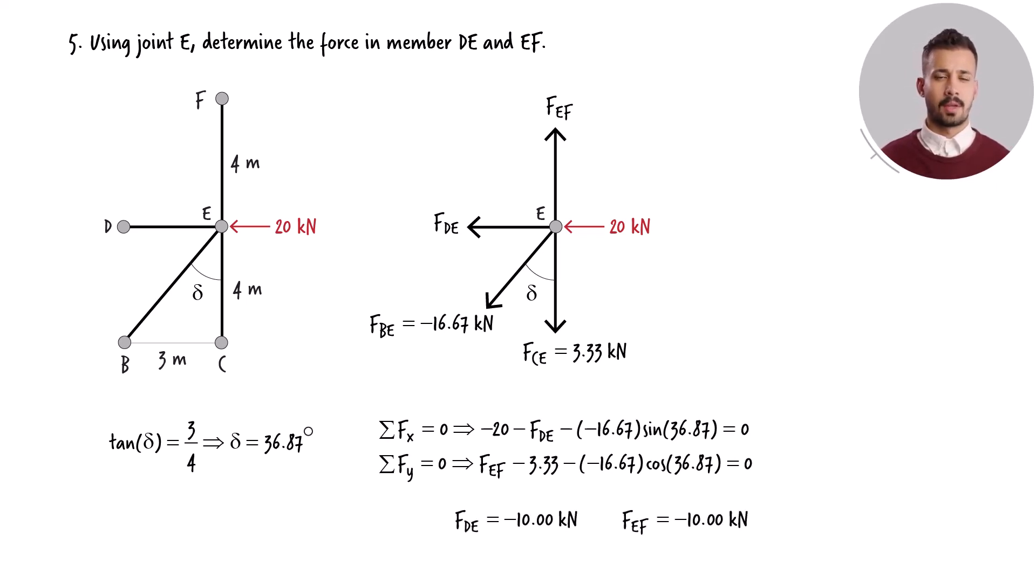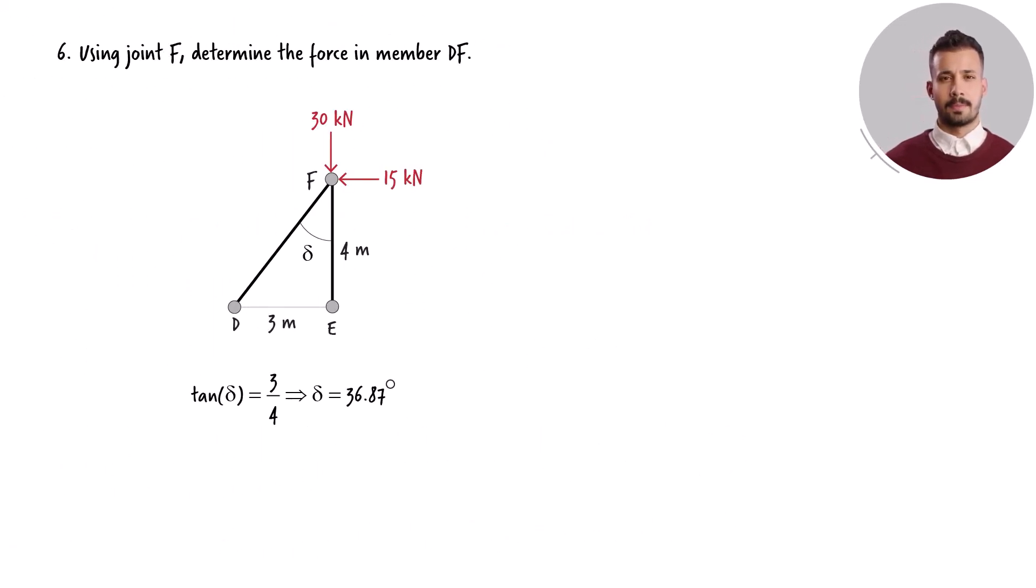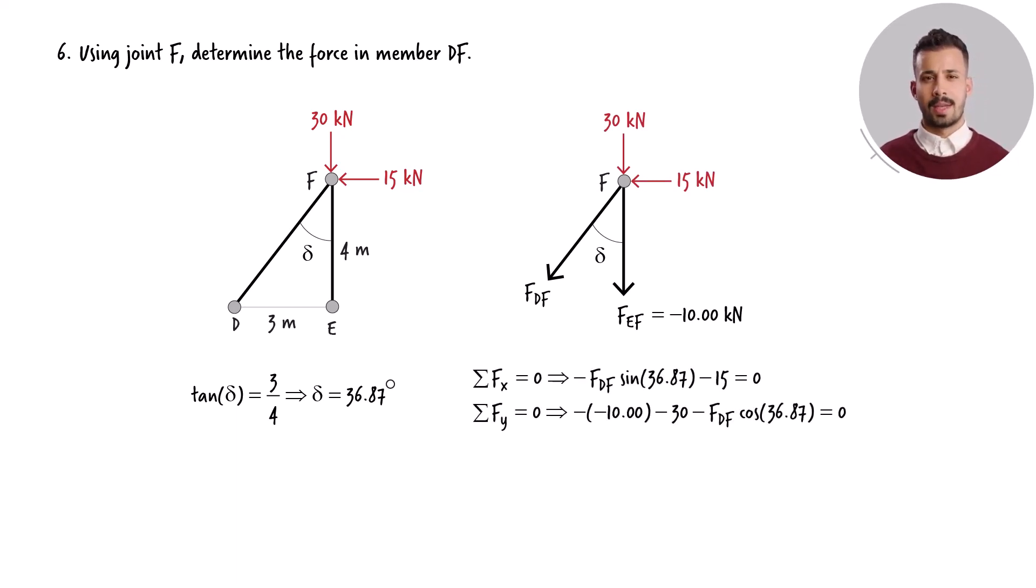The force in the remaining member, DF, can be determined using joint F. Even though it's possible to formulate two equilibrium equations for the joint, only one equation is necessary to find the remaining unknown force. Solving either equation for FDF, we get the result.